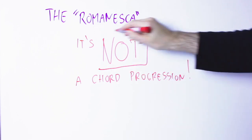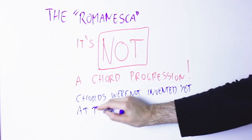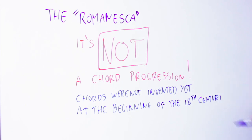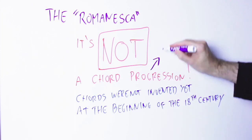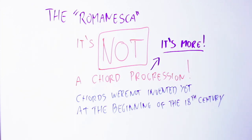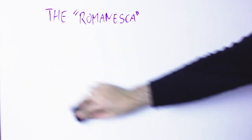Many seem to think that the Romanesca is a chord progression, but at the beginning of the 18th century, when the Romanesca originates, we didn't have the concept of chords yet. Nobody had even the idea or the concept of a chord. The Romanesca is in fact not a chord progression — it's more than that. It contains specific indications on how the bass line and the melody should go.